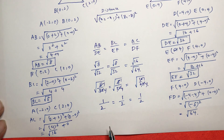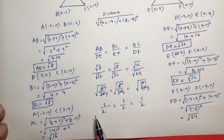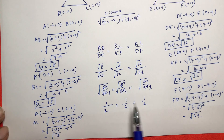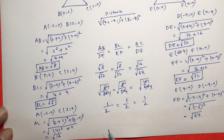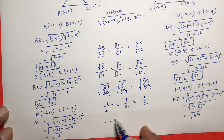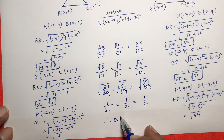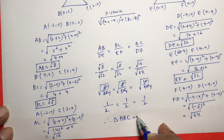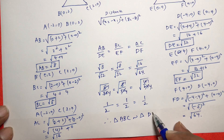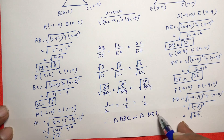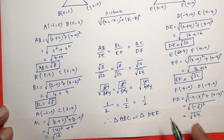Since all three sides of one triangle are proportional to the three sides of the other triangle, therefore we can say triangle ABC is similar to triangle DEF.